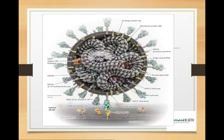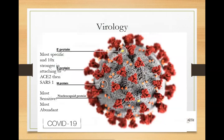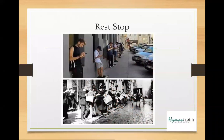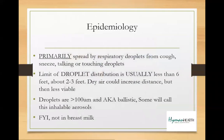This is what the coronavirus looks like — that's a model of it. The S protein is the spike protein, and all but one of the vaccines is geared towards that spike protein. The M protein is the matrix protein, and there's one vaccine geared towards that. The spike protein is the most specific and strongest at attaching, so that's where vaccine efforts are focused.